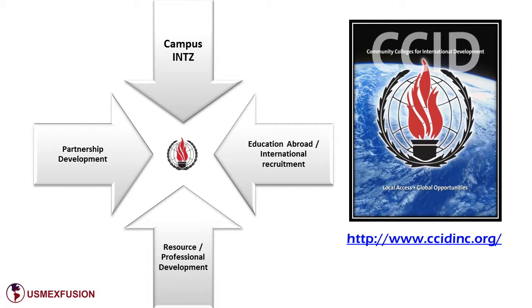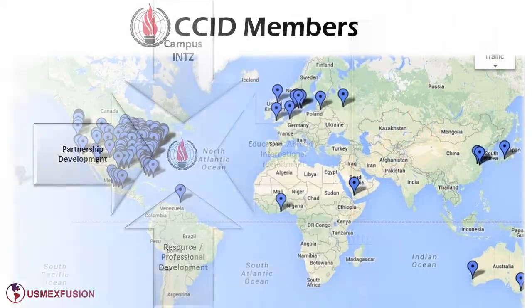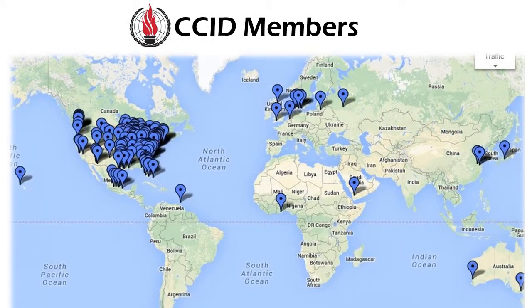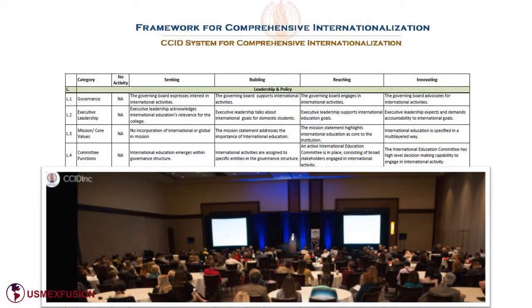CCID was founded in 1976 and has been working on international initiatives for almost 40 years. The consortium currently has over 155 member institutions worldwide. CCID is committed to providing its member colleges with tools that can help institutions establish a baseline of activity and goals for improvement in the field of campus internationalization.